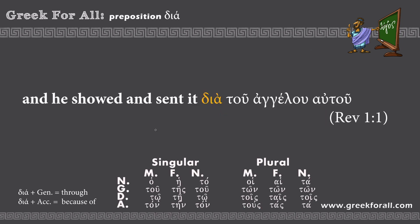Revelation 1:1 — 'And he showed and sent it dia tou angelou autou.' This is our preposition dia, followed by 'tou angelou autou.' The endings match the genitive case, which means dia plus genitive translates as 'through.' The full translation: 'And he showed and sent it through his angel.'